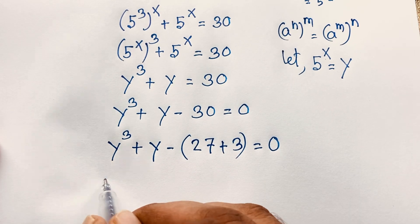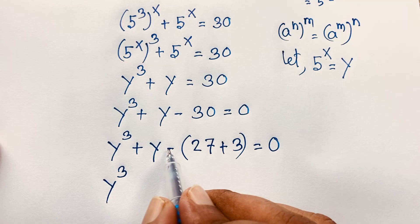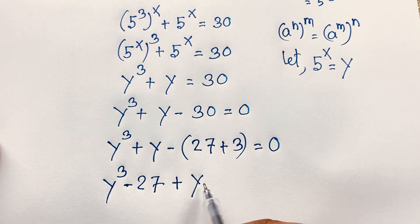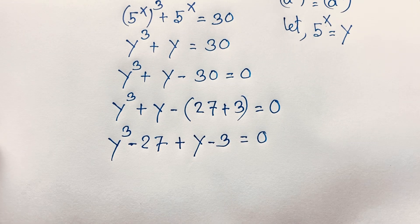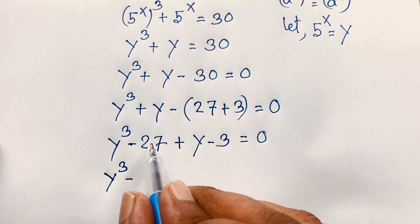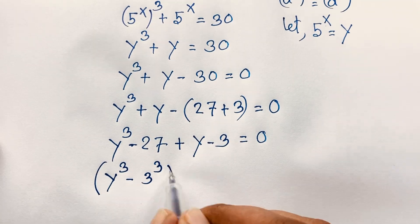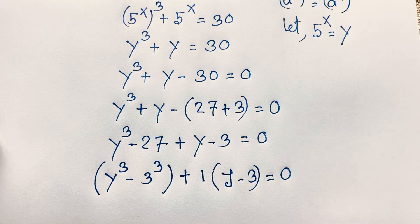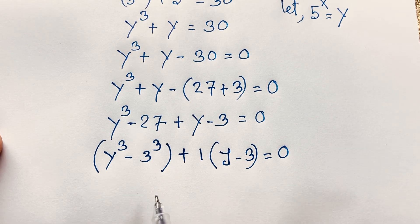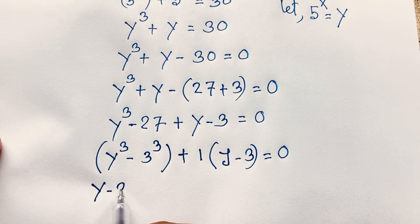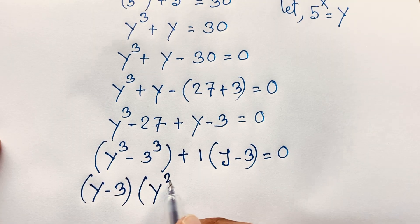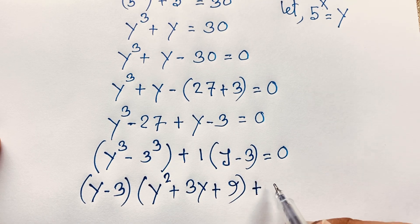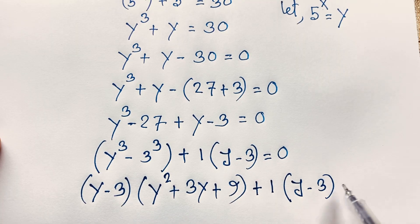Now, here is y³, then if I group terms: y³ − 27, and this is plus y minus 3 equal to 0. Here y³ − 27 is 3 to the power 3 — that is 27 — and factoring gives y minus 3, with factor 1 times y minus 3 also equal to 0.